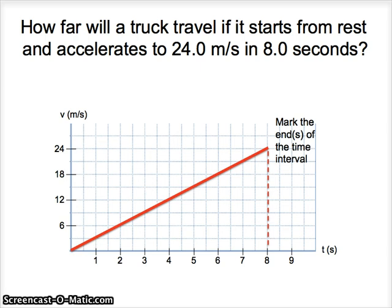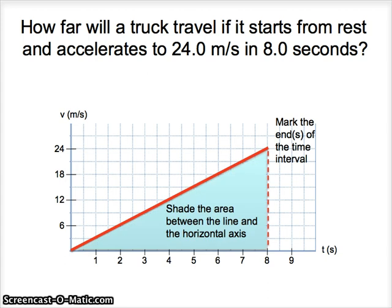You can see from our graph that it ranges from 0 to 24 meters per second, and that change requires 8 seconds. That's what the problem is describing. Assuming that the acceleration is constant, we would have this nice straight line connecting them. That represents the acceleration if we were to find the slope. But we're interested in how far the truck travels. So we need to look at the area that's formed by these various lines.